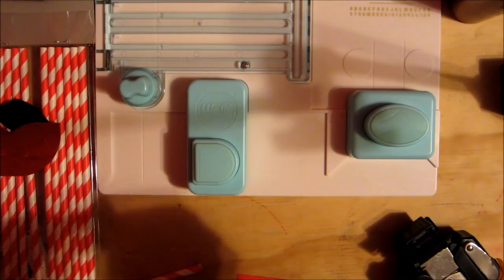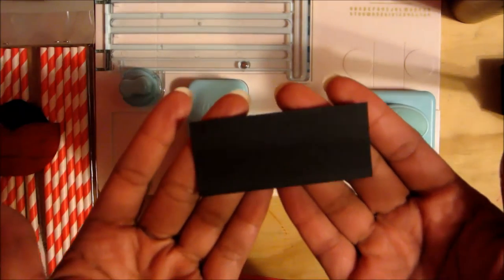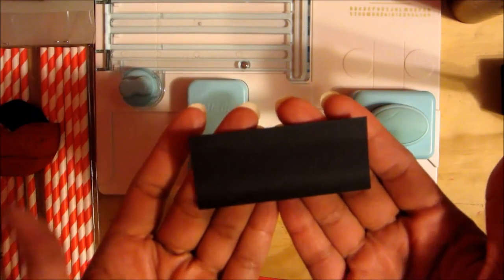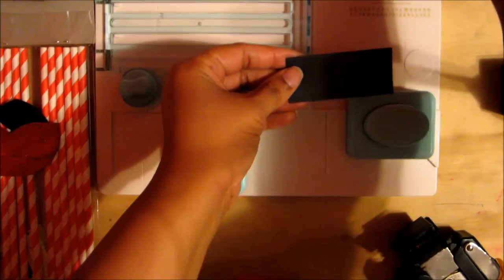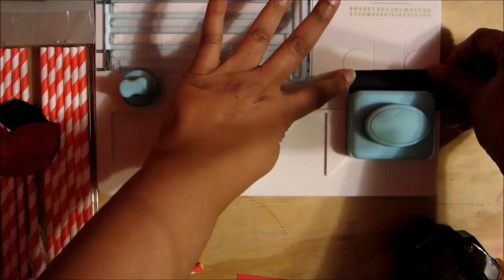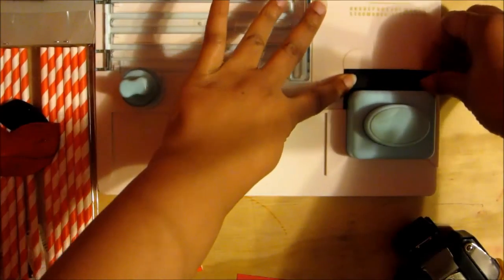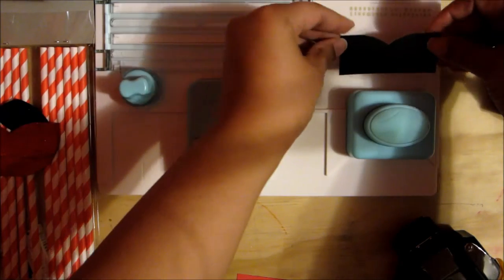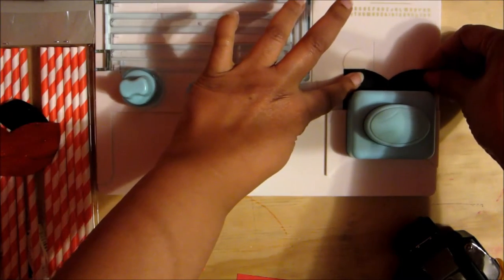The next one I'd like to show you is how to do the mustache. The paper again is 3 inches by 1 and a quarter. You will again use this punch, slide it in, give it one punch, flip the paper over, and give it another punch.